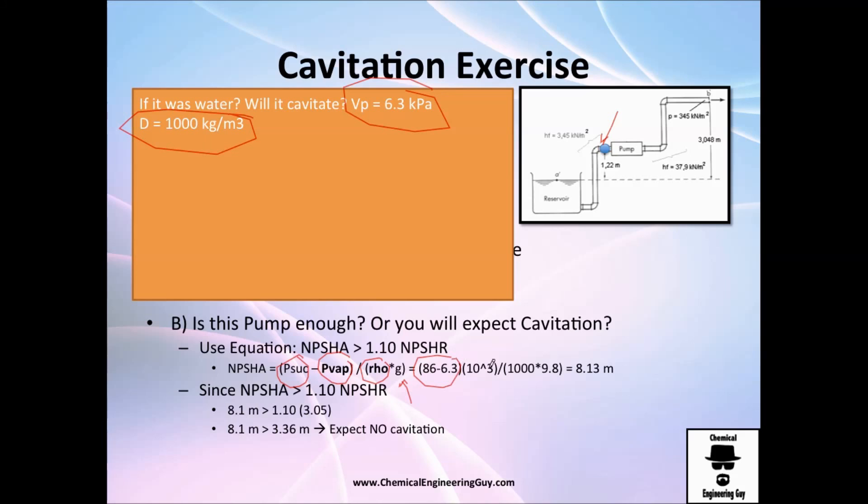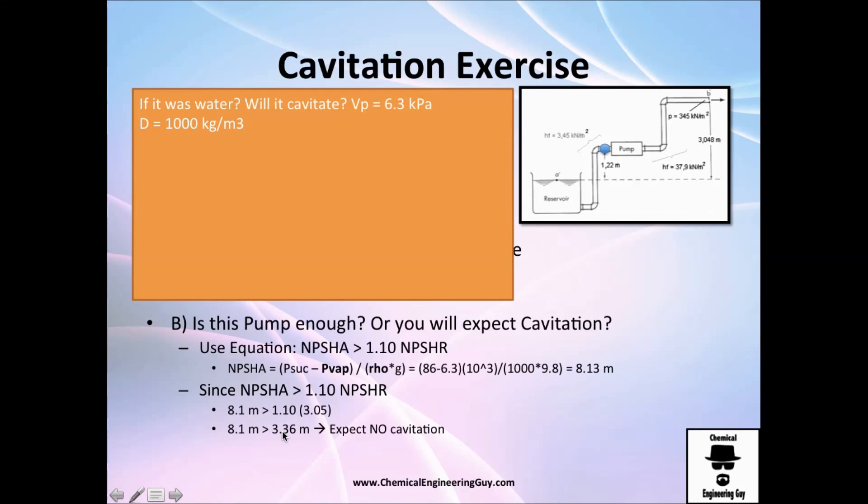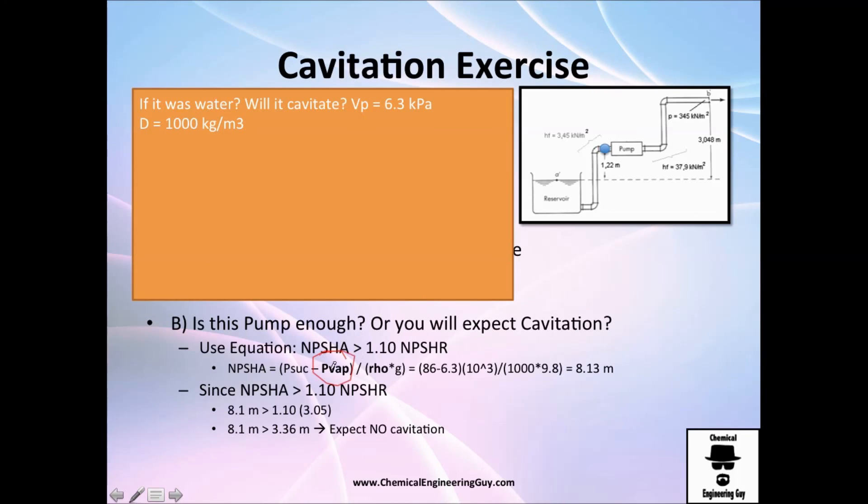So I do this calculation, then 1000 divided by this, and I got this NPSH available. I compare it once again with the 10% of safety, and I see that actually I got more: 8.1 versus 3.36. From the last example was 7.5, so yes, I am still able to work with this fluid. And it makes sense guys, because the vapor pressure is too low compared to this one right here, which was 21. The lower you go, you can see the lower you have this vapor pressure, the more NPSH available you will have. And that's always a good thing to have.